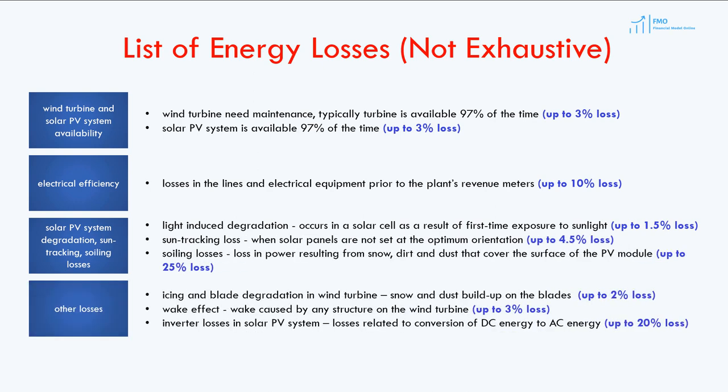We have compiled a list of important energy generation losses relevant for wind turbines and solar panels. Note that this list is not exhaustive, and many of the losses are project-specific. Typically, a consulting engineer will provide the turbine or solar panel rated capacity and net capacity factor to be used in financial modeling. As a financial analyst, you don't need to concern yourself with gross energy yield and energy generation losses. However, it is always a good idea to have some knowledge about the origins of the numbers we use in the financial models.